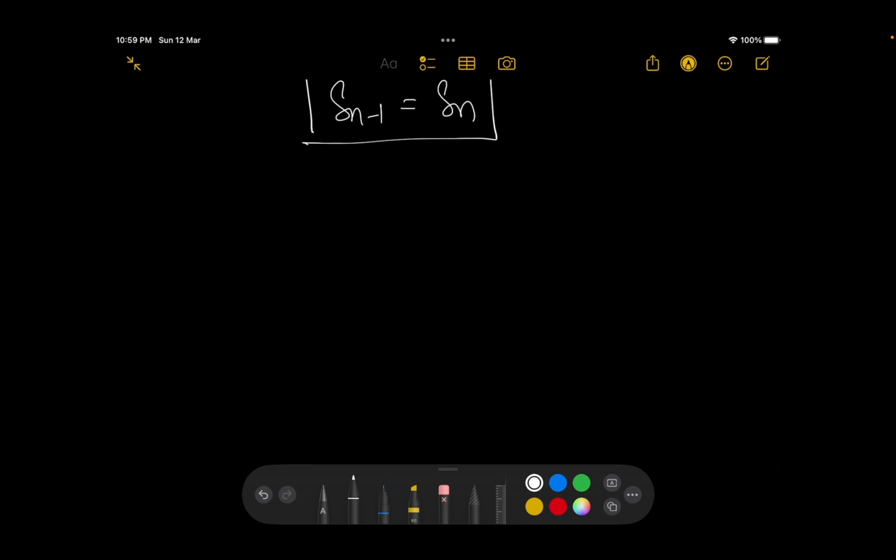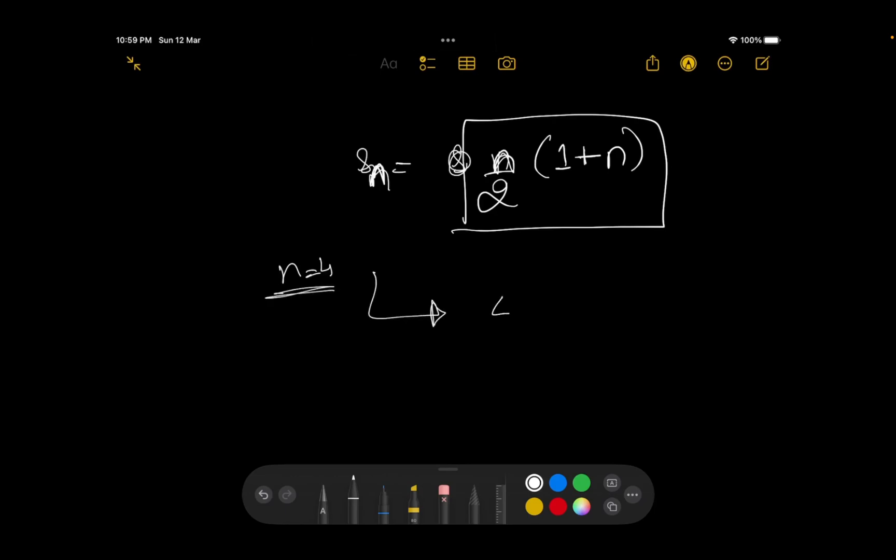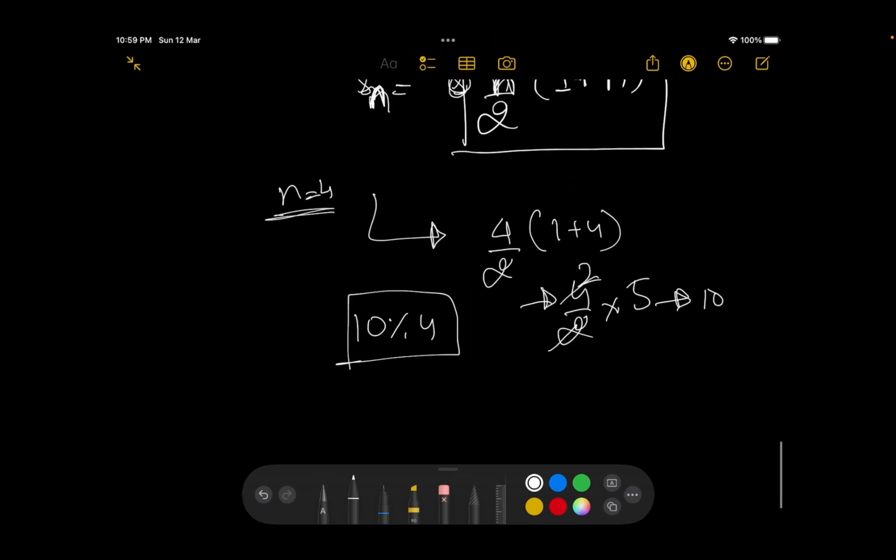So let's just calculate the value of S of n. S of n actually is n by 2 into a plus l. So over here a is 1 and I am saying since I am going up till n, so l is going to be n itself. This is the value I get. Now is this value always divisible by n? No, that's not the case. Let's just try it for a value. Let's say n is equal to 4. So this becomes 4 divided by 2 into 1 plus 4. That gives me 4 divided by 2 into 5. It gets cancelled out. It becomes 10. Now 10 is not divisible by 4.